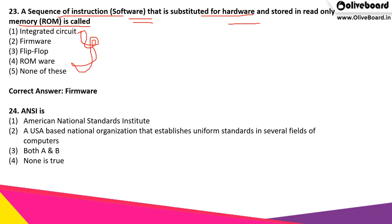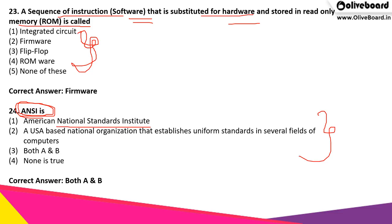The next question: ANSI is what? Out of the following options, what is the correct answer for ANSI? It is option 3, both A and B, which means ANSI stands for American National Standards Institute — a USA-based national organization that establishes uniform standards in several fields of computers.